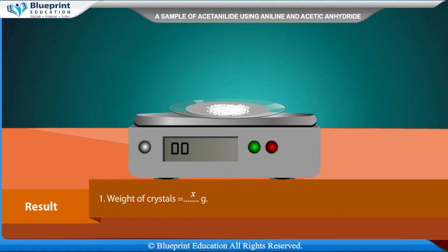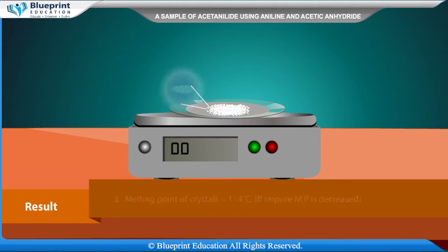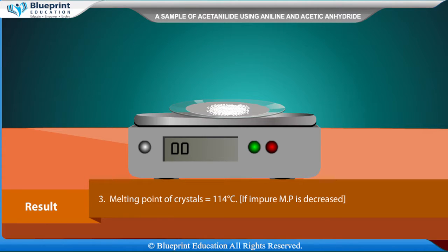Result: Weight of crystals is equal to x grams. Appearance of crystals is equal to white shining flakes. Melting point of crystals is equal to 114 degrees Celsius. If impure, the melting point is decreased.